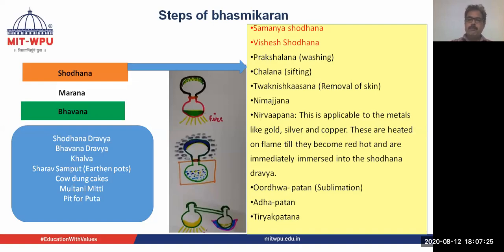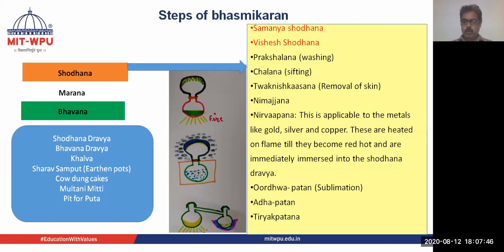For this process we need: Shodhana dravya, Bhavana dravya, a Khalva for granulating it, Sharao Samput which are shallow earthen pots, cow dung cakes, Multani Mitti for sealing the edges of the earthen pot, and a pit for Puta to apply agni.